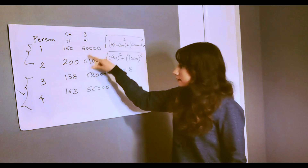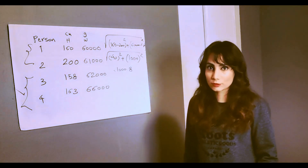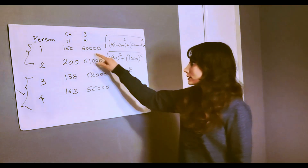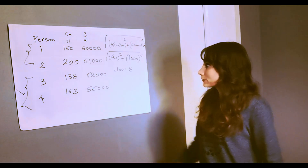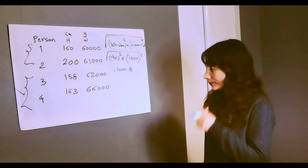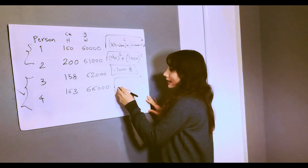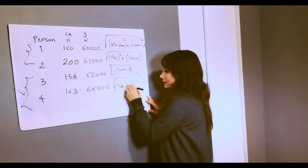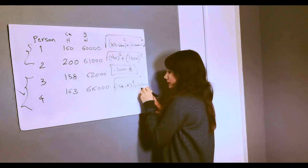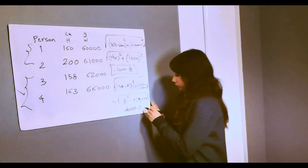Even though the height difference between persons one and two is much more visually obvious, the weight term dominates the calculation. For persons three and four: (158 − 163)² + (62,000 − 66,000)² comes out to approximately 4,000. The height contribution is almost completely neglected again, but there is a little bit of difference. The final answer is 4,000 versus 1,000.